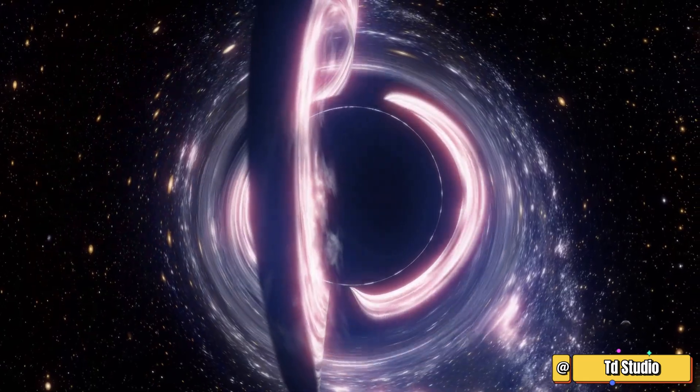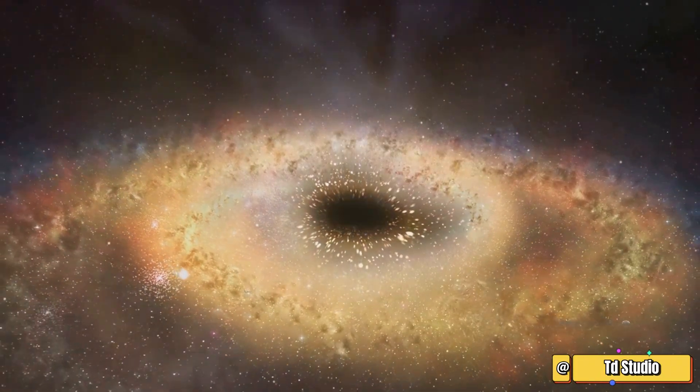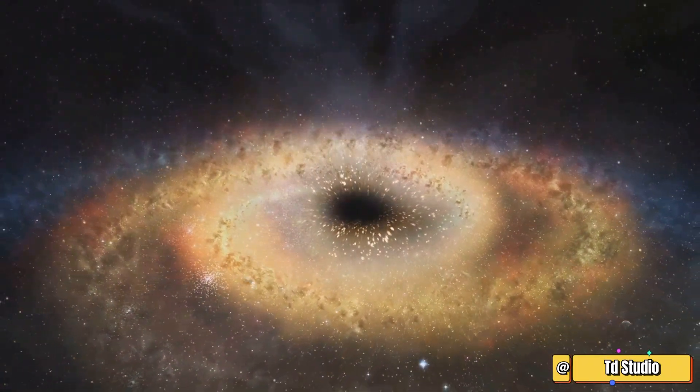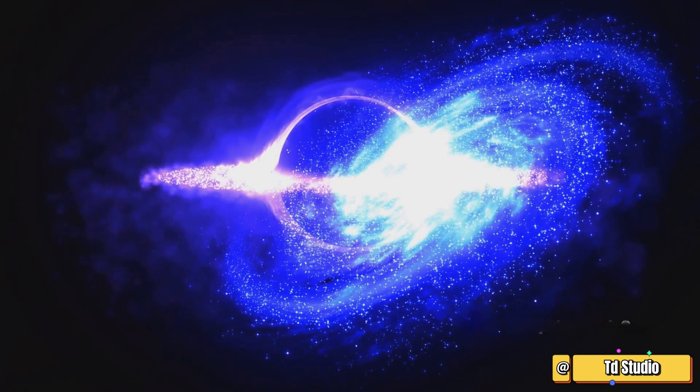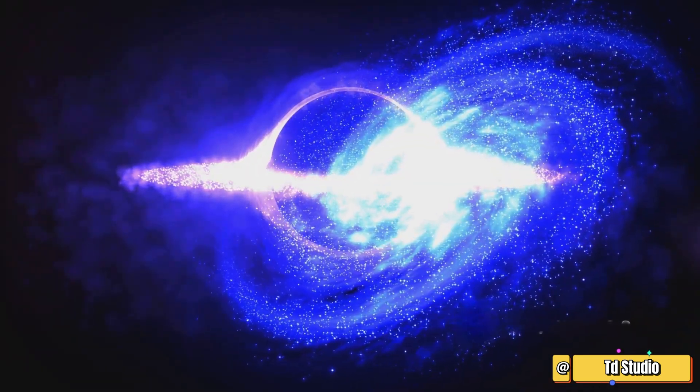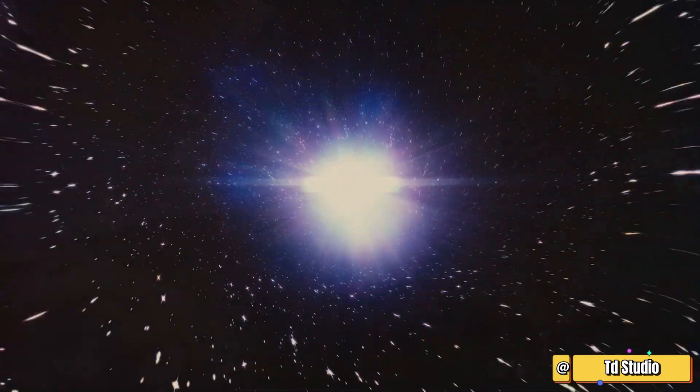Both the Milky Way and Andromeda have supermassive black holes at their centers. During the collision, these black holes will spiral toward each other. They will eventually merge, releasing enormous energy in the form of gravitational waves. These waves will ripple through space-time.